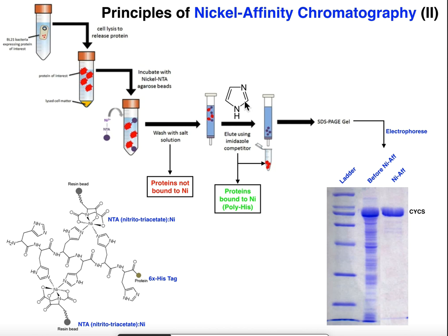The interaction between the histidines and nickel is very strong, so the salt is not enough to wash out the bound protein. Once I've washed away all the proteins I'm not interested in, I elute my protein by adding a competitor — straight imidazole, which is just the R group by itself. The imidazole competes for the nickel because it's the same functional group as on the histidine R group, knocking off the histag so the protein falls off and can be eluted.